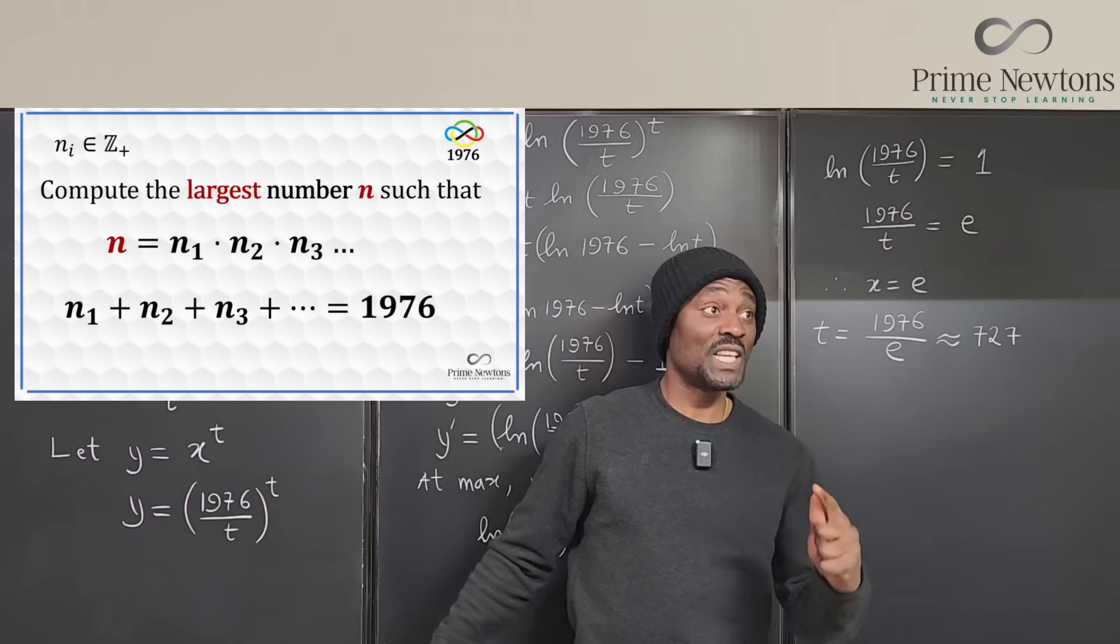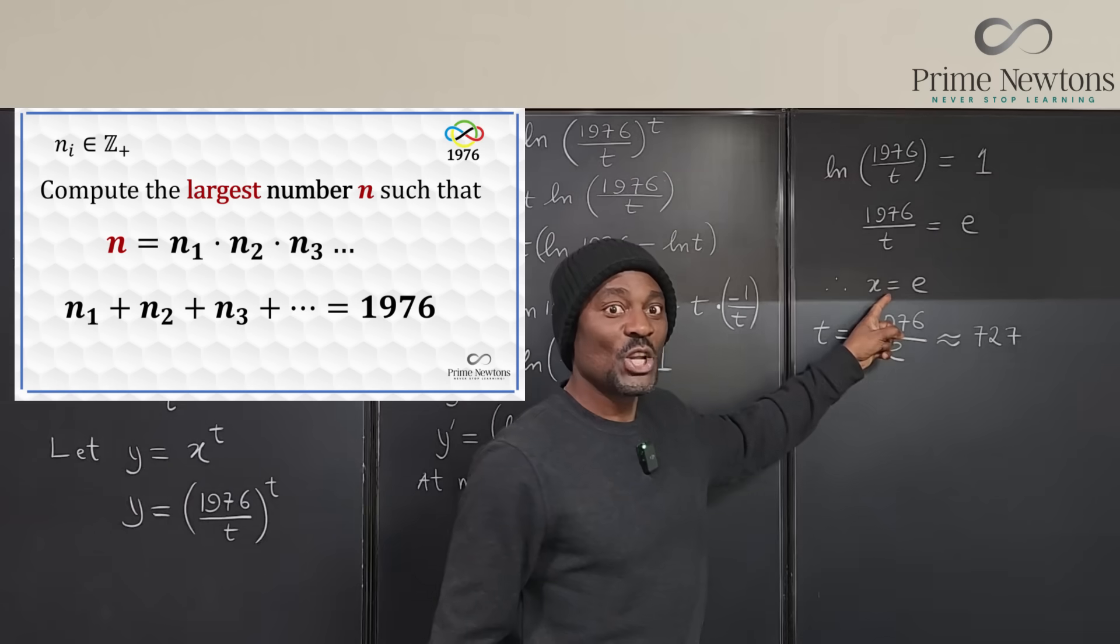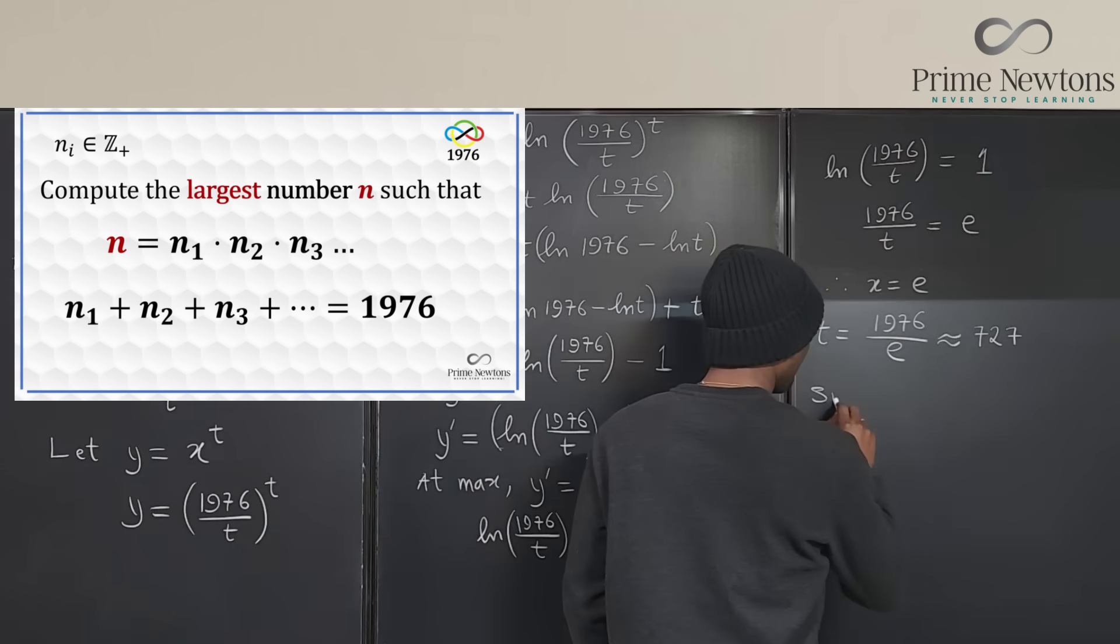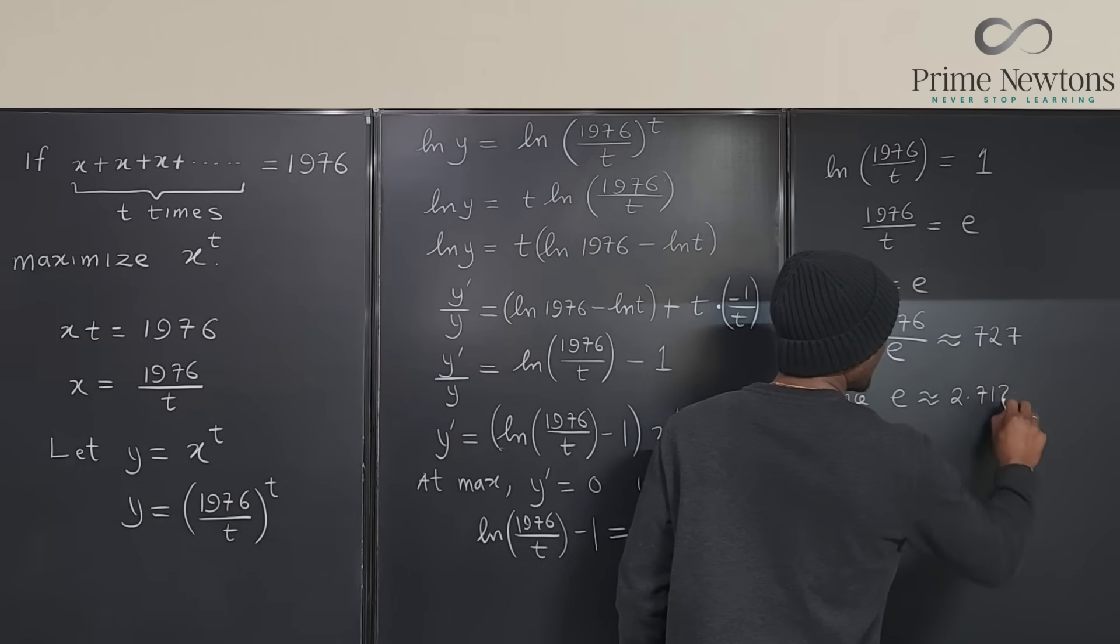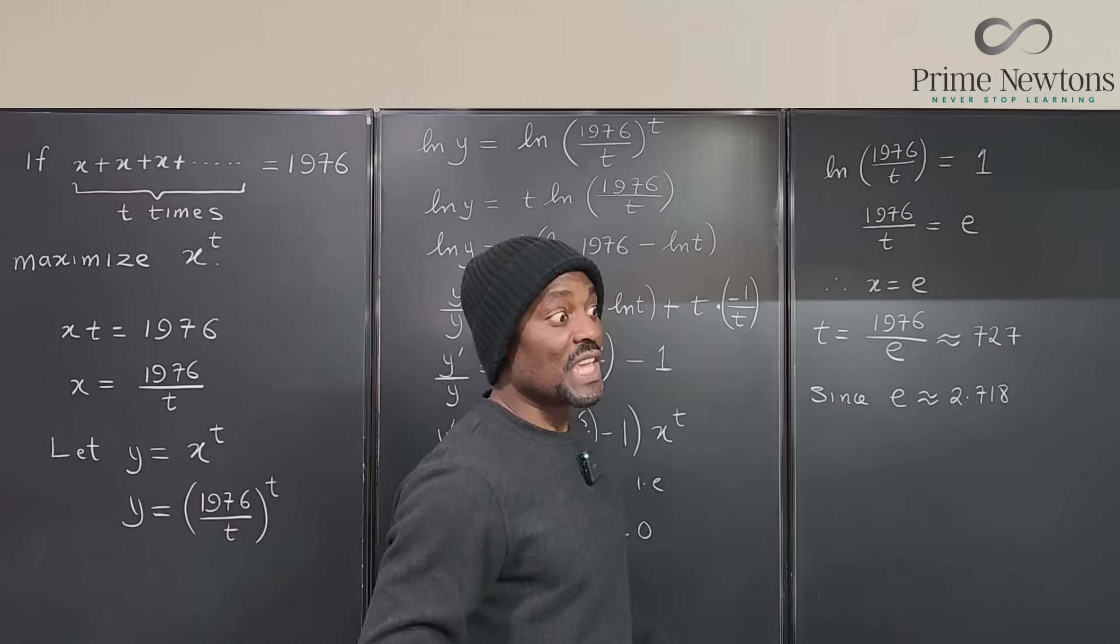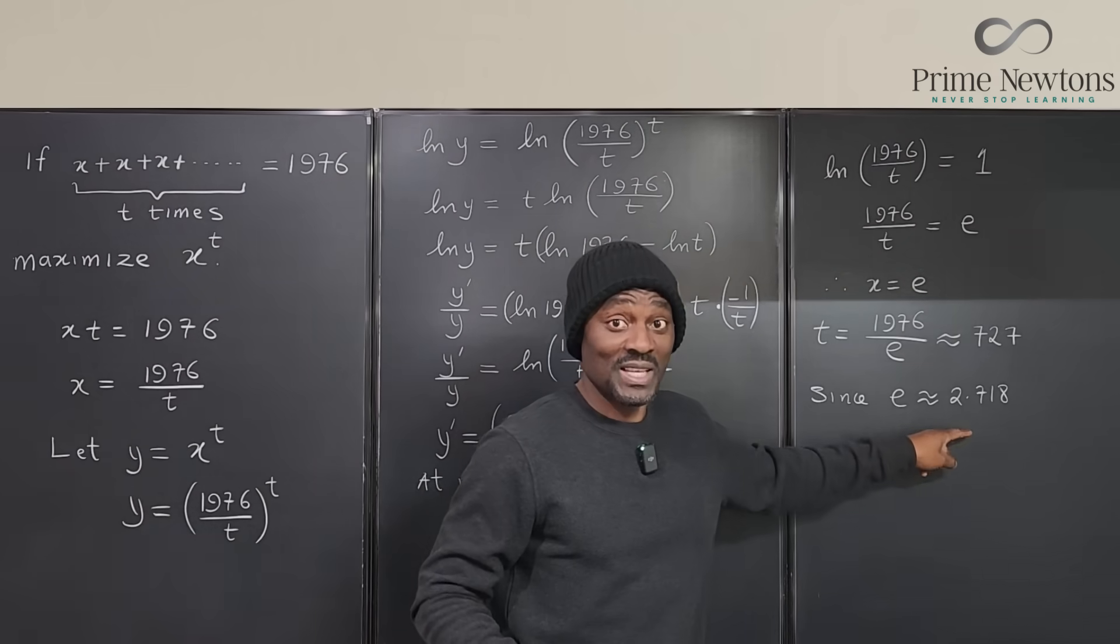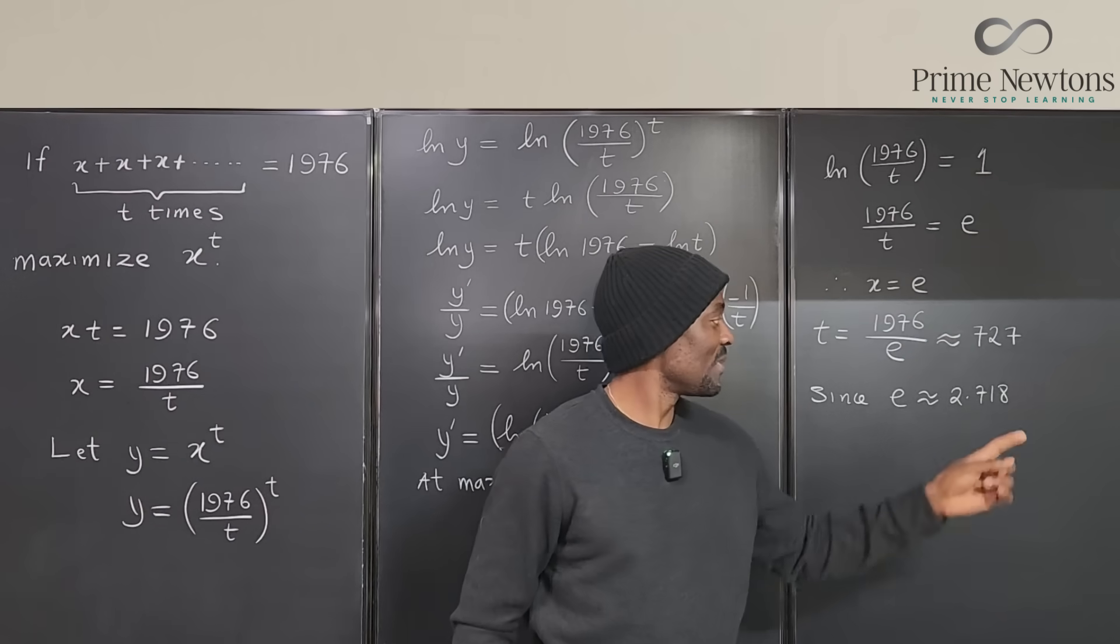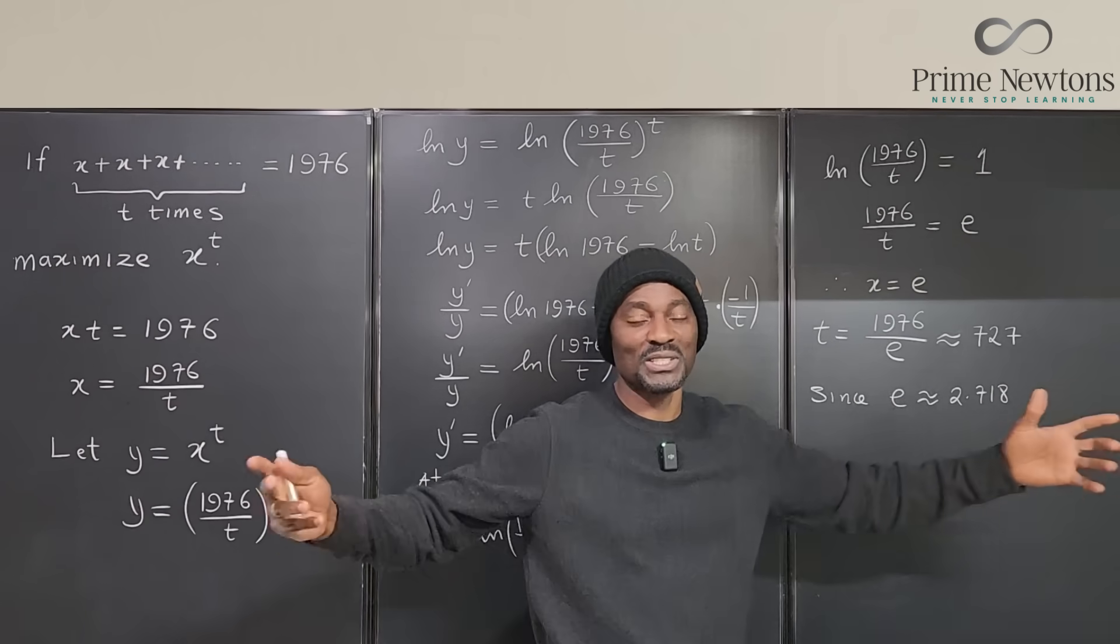Now according to the number theory problem we cannot use E because E is not an integer. So what you do is you find the integer that is closest to E. Remember, since E is approximately 2.718, the closest integer to E is 3. Now if you cannot use 3 every time, you have to use the next integer closest to this. It is not 4 and it is not 1, it has to be 2, because E is between 2 and 3. So those are the two numbers you must use if you must maximize.